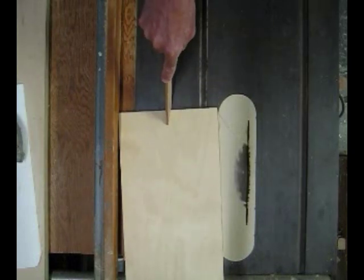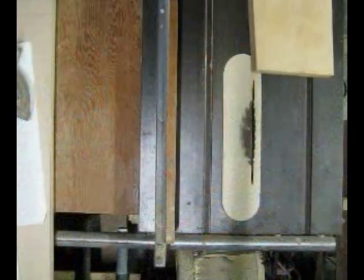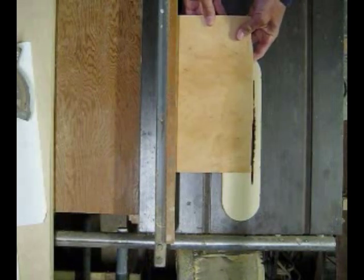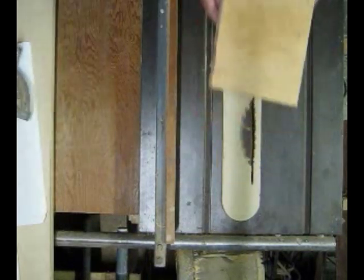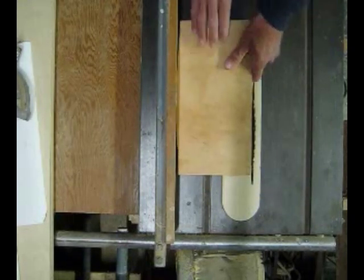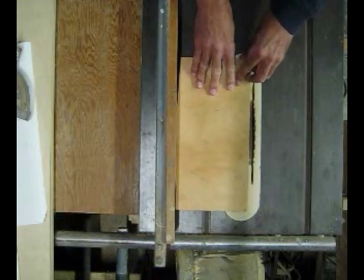When ripping on the table saw, you must have a straight edge on the edge of the board that is held up against the fence when making the cut. If the board doesn't have a straight cut on the edge that is held up against the fence, then of course the board will rock as you're pushing it through the blade.